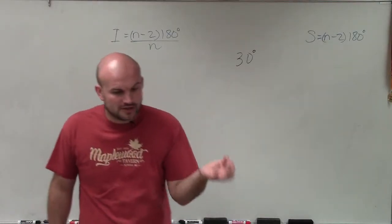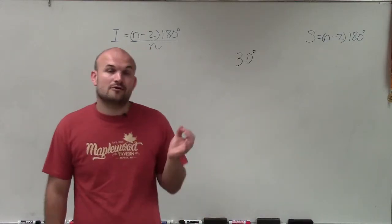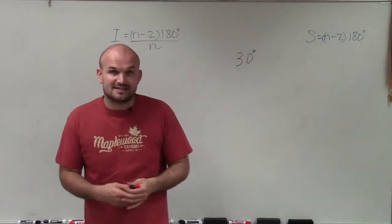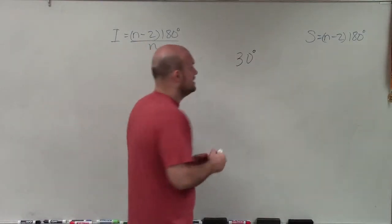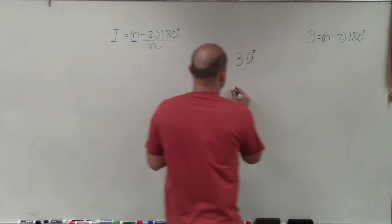Remember, one exterior angle of this regular polygon is 30 degrees. Now remember, the sum of all exterior angles for all polygons is always going to be 360 degrees.